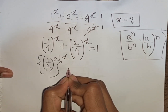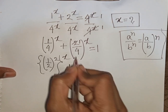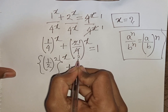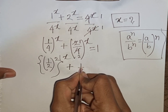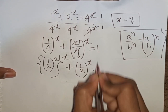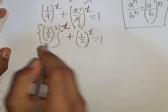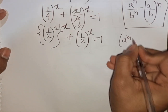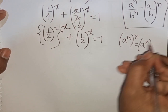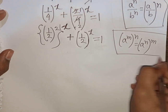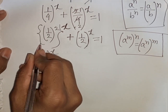So (1/4) divided by (1/2) means the first bracket can be rewritten in terms of the second bracket. This simplifies, giving us (1/2)^x equal to 1. Now we can apply the exponential rule that (a^m)^n = a^(m·n).